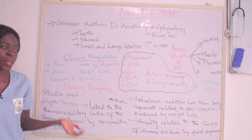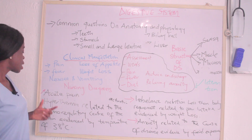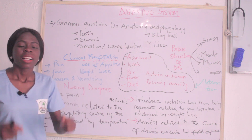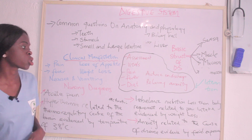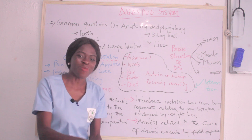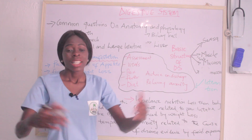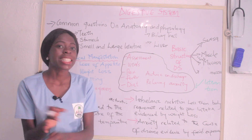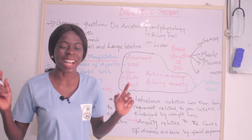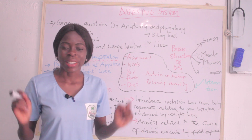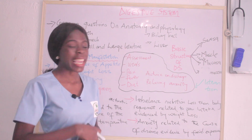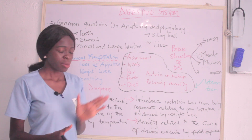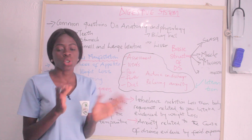That takes us to the nursing diagnoses related to the digestive system. The first is acute pain — we have already explained why there is pain. The second is hyperthermia, related to the activation of the thermal regulatory center of the brain, evidenced by a temperature of 38 degrees Celsius. The third is imbalanced nutrition, less than body requirements, because the patient does not have appetite. The fourth is anxiety — anxiety related to the cause of the disease, evidenced by facial expression. Most patients are usually very anxious, so anxiety is almost a giveaway diagnosis.